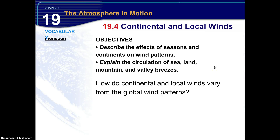And here we go, the final section of chapter 19, 19.4. This is also the last section in part 1 of unit 5. Let's continue on with the continental and local winds. We have two objectives: describe the effects of seasons and continents on wind patterns, and explain the circulation of sea, land, mountain, and valley breezes. The key idea is that seasons, landmasses, and topography cause winds to vary from the global patterns depicted in the three-cell circulation model from the previous section.